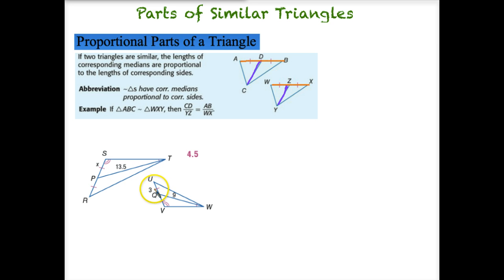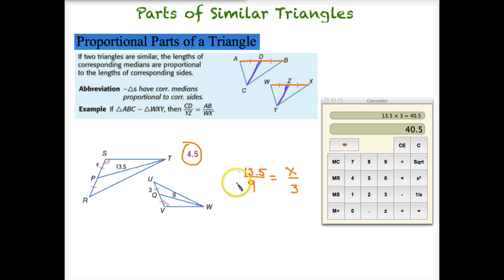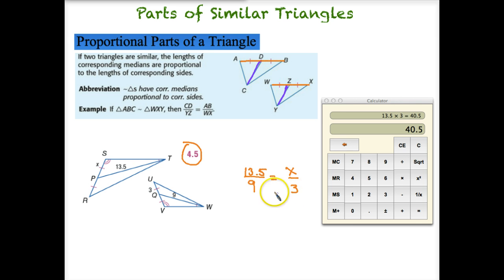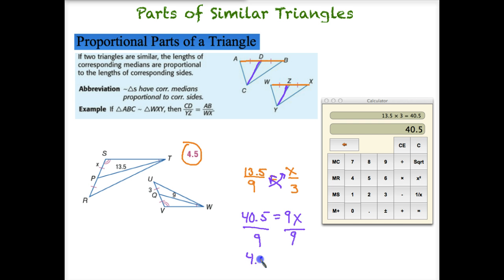The answer is going to be 4.5 — pause the video and try it on your own. Hopefully you set up your proportionality statement comparing the two medians: 13.5 over 9, equal to X over 3, since those sides are corresponding. Cross multiplying, 13.5 times 3 gives us 40.5, and X times 9 is 9X. Dividing both sides by 9, X equals 4.5. So segment SP is equal to 4.5, since we have similar triangles and these are our medians.